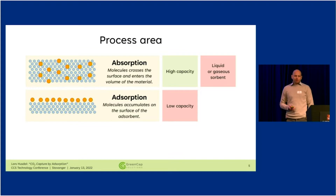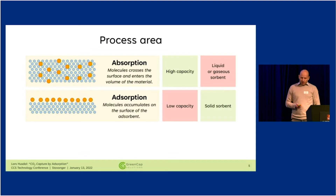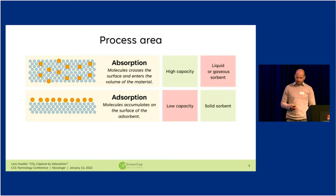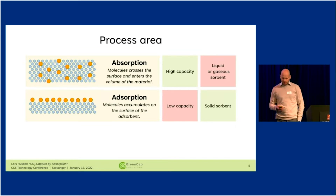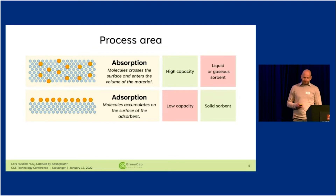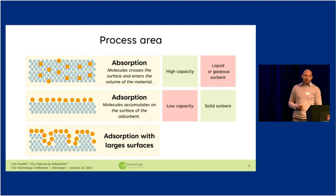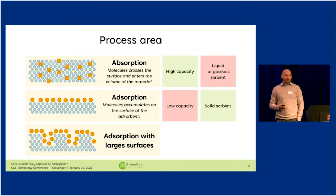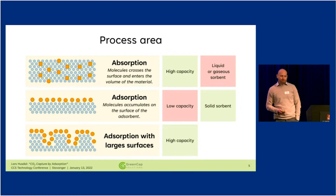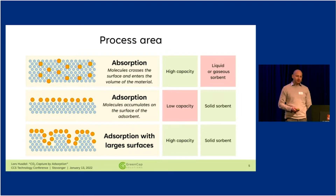With adsorption we have much lower capacity because we're only working with two dimensions. However, we have a much better reactive area and we can use a solid adsorbent, which eases the technology side. But what if we can use the best of both worlds? If we use a material which has a high surface area, like a porous medium, then we can have both high capacity and a large reactive area, while still using a solid adsorbent.